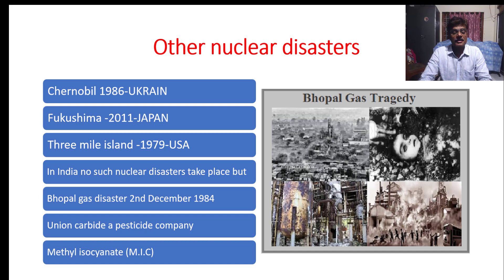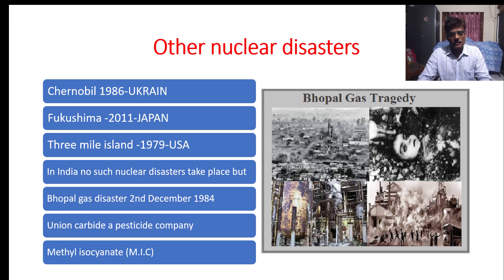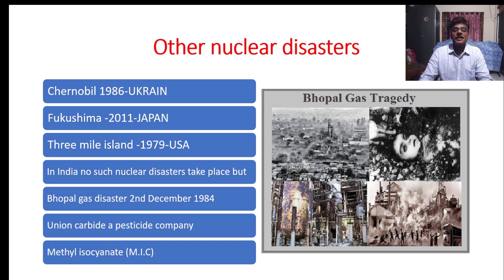In India, no nuclear disaster has taken place, but the Bhopal Gas Tragedy occurred on 2nd December 1984 — the biggest industrial disaster. It happened at a Union Carbide pesticide company, which released methyl isocyanate gas. It was not a nuclear disaster but a chemical industrial disaster, showing how dangerous improper care can be.